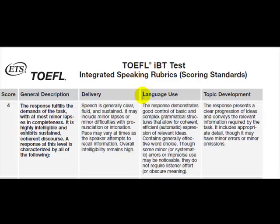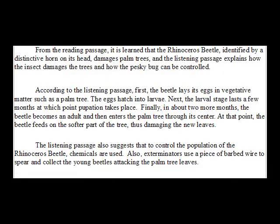Language use. The response demonstrates good control of basic and complex grammatical structures that allow for coherent, efficient, automatic expression of relevant ideas. Let's take a look at the speech thinking about this idea again — good control of basic and complex grammar that allows for coherent, efficient, automatic expression. Taking a look at the speech, let's look at what's called control of basic and complex grammar. Control means you're using it without a lot of problems, and coherent and automatic kind of means everything connects together and your speaking sounds natural.